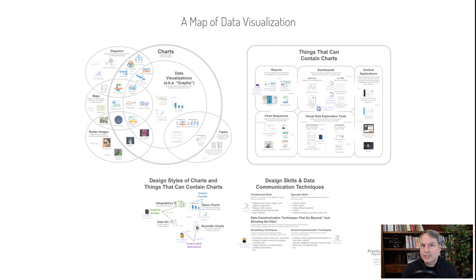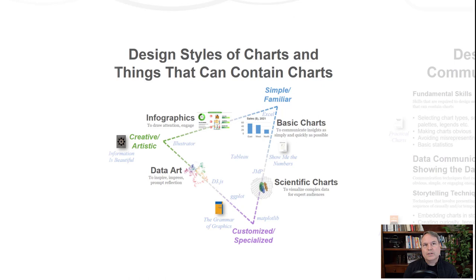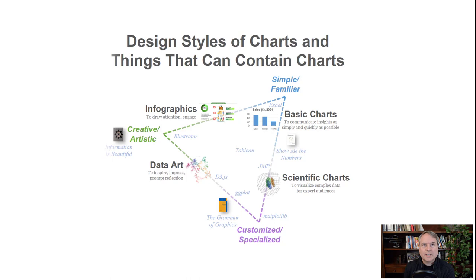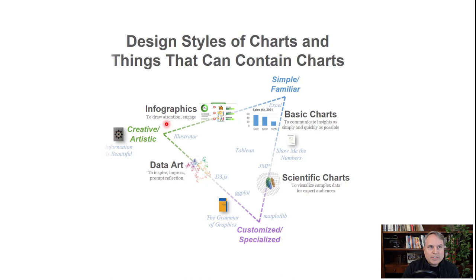So those are things that can contain charts. But what about terms like infographics, data art, scientific visualizations? Where would those fit? Those are here in the third part of the map, which I call design styles of charts and things that can contain charts. Every chart or thing that can contain charts falls somewhere in a triangle between a creative artistic style, a simple familiar style, or a customized more specialized style. That's really what makes, for example, an infographic — it is designed in a creative, artistic way, and its purpose is to draw attention or engage users. It's basically an attention-grabbing visual. So in the way people tend to use this term in everyday conversation, an infographic is a visual created in a creative or artistic style that is designed to grab attention.